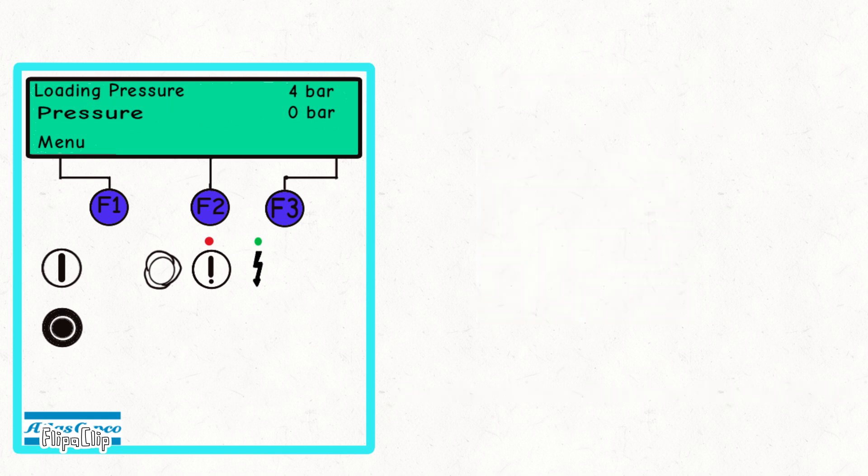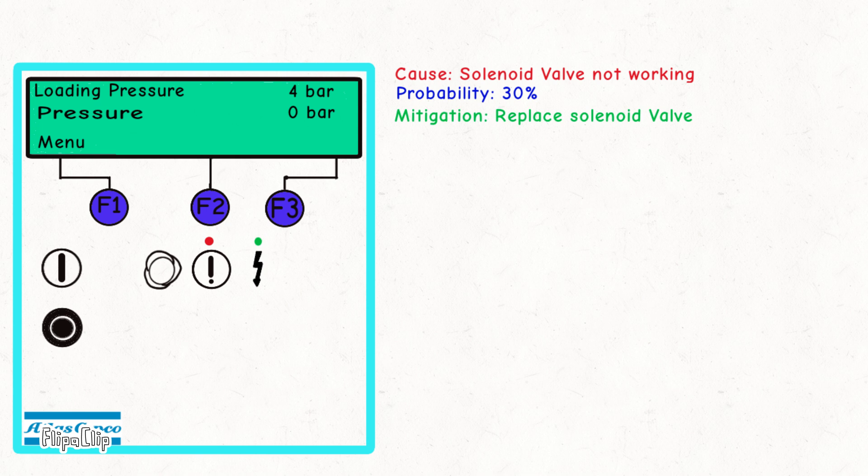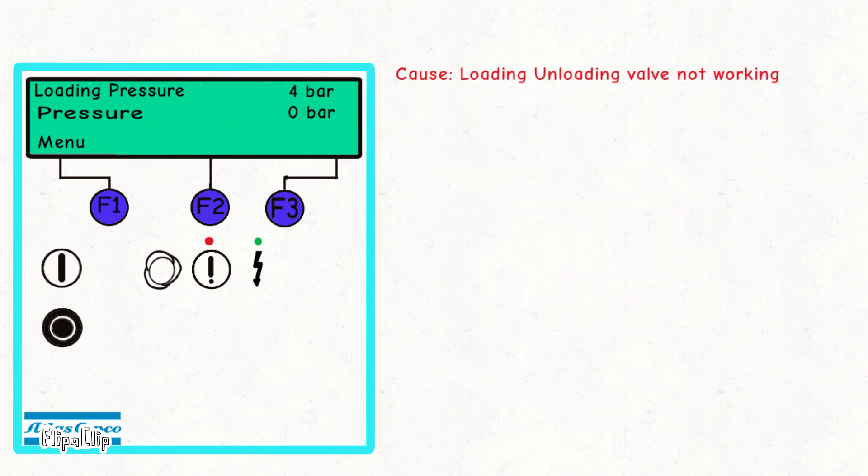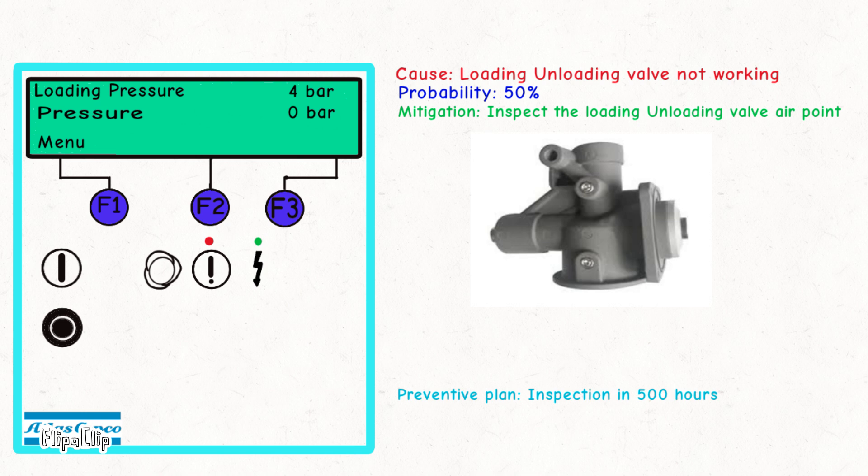If the compressor is not loading, a potential cause is a malfunctioning solenoid valve, which has a probability of 30%. To resolve this, replace the solenoid valve and perform periodic inspections to prevent future issues. Another cause could be a malfunctioning loading/unloading valve. Inspect the airline for any blockages and conduct inspections every 500 hours to prevent this problem.